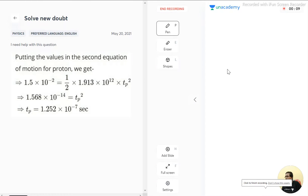The question is putting the value in the second equation of motion. We already know that s is equal to ut plus half a t square. In place of s we have 1.5 into 10 raise to the power minus 2. In place of u we have 0.